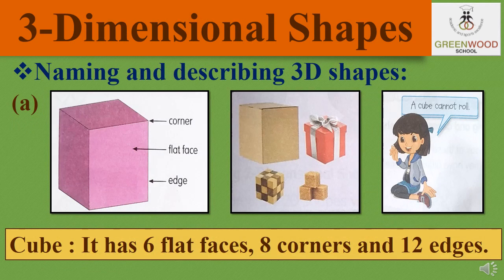The last topic is three-dimensional shapes — naming and describing 3D shapes. The first one is cube. It has six flat faces, eight corners, and twelve edges. Edges means lines. All the six flat faces of a cube are of the same size. A cube cannot roll because it has a flat surface, and objects with flat surfaces do not roll.